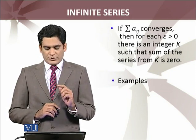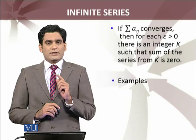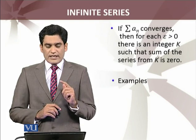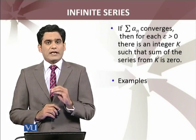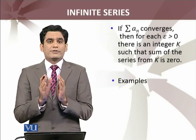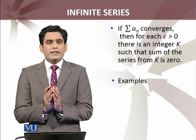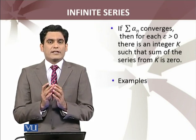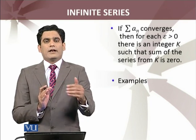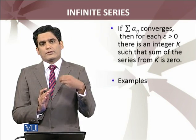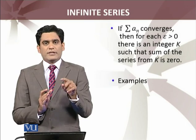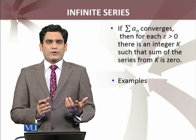So, if summation a_n is convergent, then for each epsilon greater than 0, there is an integer K such that the sum of the series from K onwards is zero. Agar yeh nahi, suppose karein ke yeh agar nahi hota, it means ke series ka sum jo hai, it keep on increasing. Agar keep on increasing ho jae, then the series will diverge.